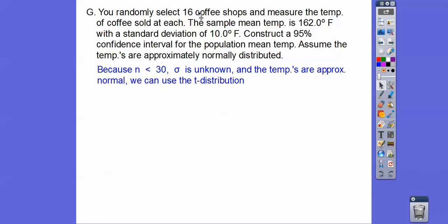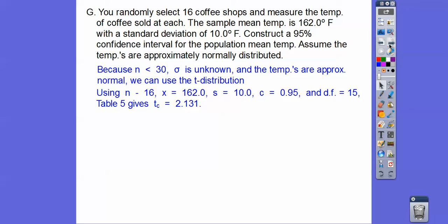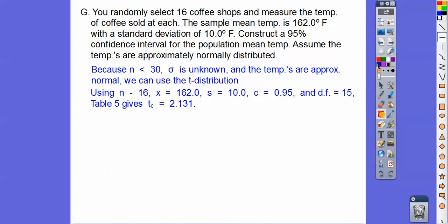If the problem didn't say normally distributed and n equals 16, which is less than 30, we couldn't use a t-distribution properly. So it's important to state that the distribution is normally distributed, or that n is greater than or equal to 30. Using n equals 16, sample mean equals 162, sample standard deviation equals 10, and a 95% confidence level, the degrees of freedom is 15 — that's 16 minus 1.